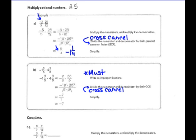Let's talk about and walk through this problem. When you are multiplying, we work horizontally across — not vertically — because you're going to multiply the numerators, negative 3 and 25, and multiply the denominators, 5 times 12. However, according to the Singapore model, divide the numerator and denominator by their greatest common factor. We call that cross-cancelling.